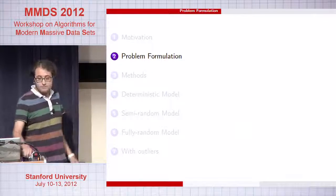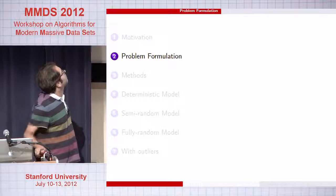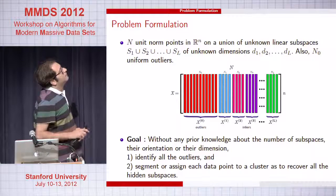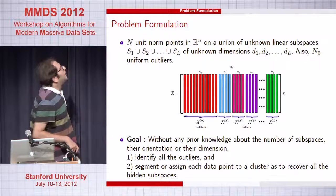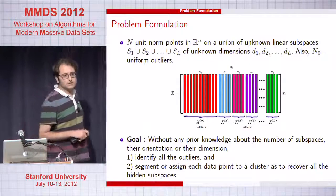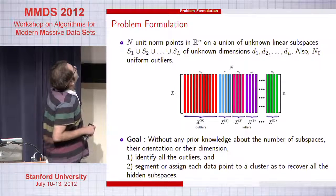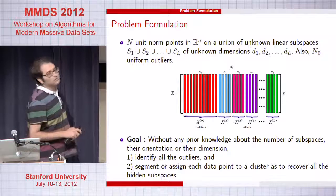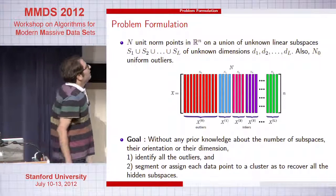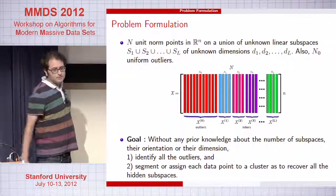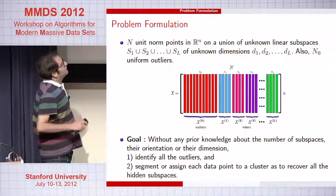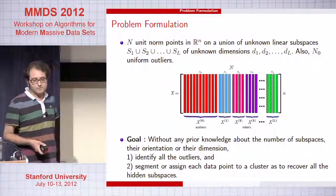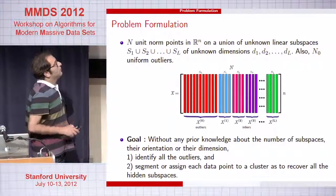Let me formulate the problem mathematically. We have N unit norm points living on a union of nonlinear subspaces. The unit norm assumption is not restrictive because I can always normalize my data points. I'll use color coding to denote these subspaces, whose dimension is denoted by d. In general, I also assume there are a bunch of outliers. The goal is to find all these outliers and, without making any assumptions about the number of subspaces or their dimension, to find all the subspaces.